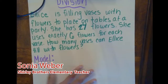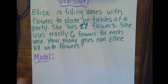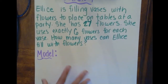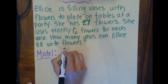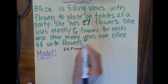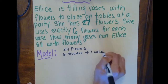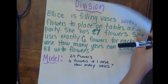Hey friends, today we're looking at division problems where we know our total and we know how much goes into a group, but we're going to find out how many groups — that's what we're solving for. Let's look at our word problem: Elise is filling vases with flowers to place on tables at a party. She has 24 flowers and uses exactly 6 flowers for each vase. How many vases can Elise fill?